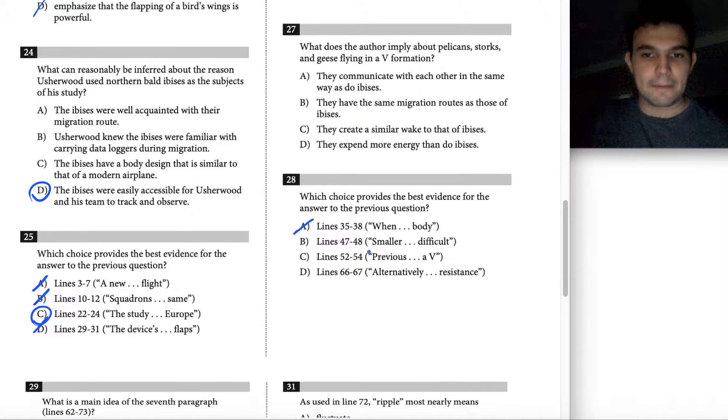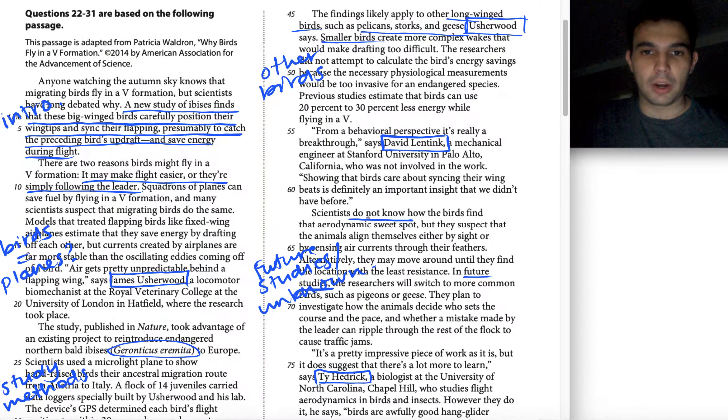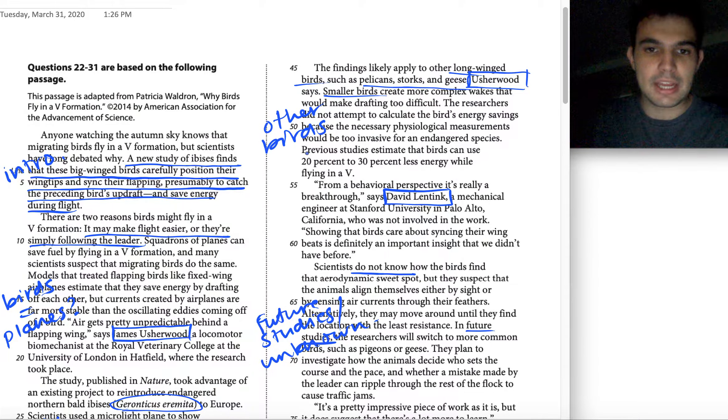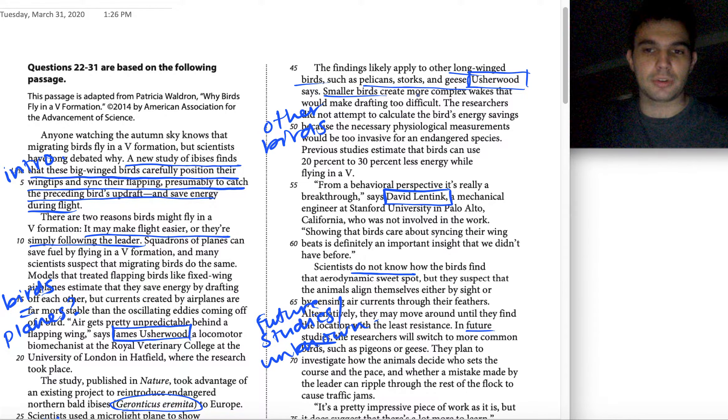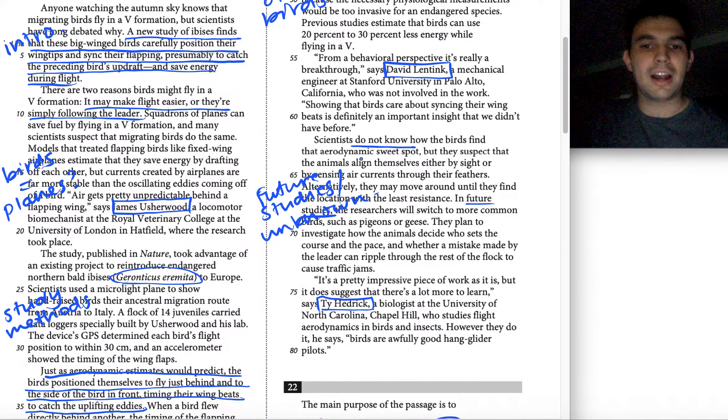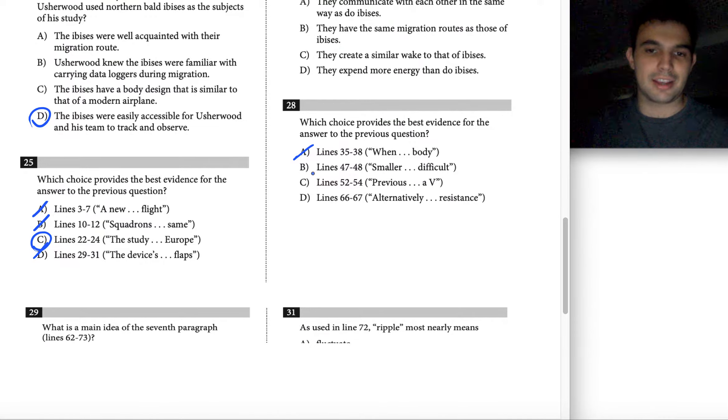How about choice C, lines 52 to 54? So those lines read, previous studies estimate that birds can use 20% to 30% less energy while flying in a V. I don't love this answer because it is too general. We want to talk about specifically pelicans, storks, and geese, and this is talking about all different kinds of birds. So because it is so general like that, I'm going to take it off the table.